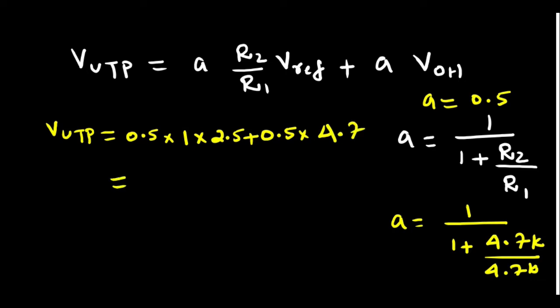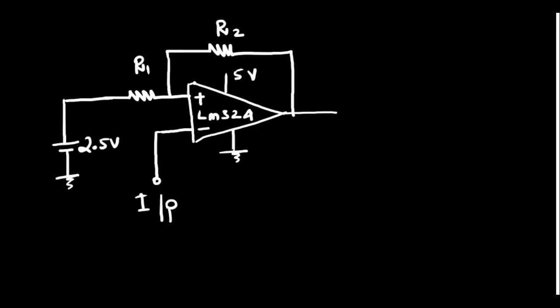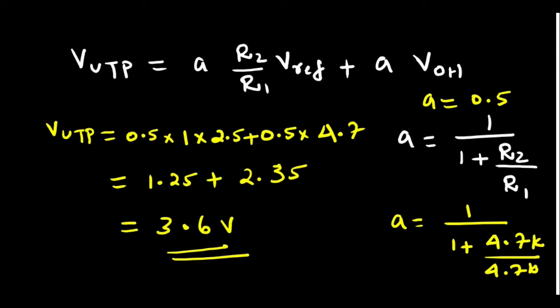Now let me take a calculator and simplify it. That is 0.5 multiplied by 2.5 comes to 1.25 plus 0.5 multiplied by 4.7, that's 2.35. So if we add these two, what do we get? 3.6V you get. So for this circuit, R2 was 4.7K and this is a good circuit for practical applications. This 2.5V you will be giving from a preset or potentiometer so that you can vary it, so your UTP and LTP also varies.